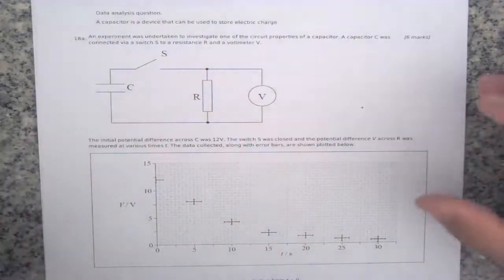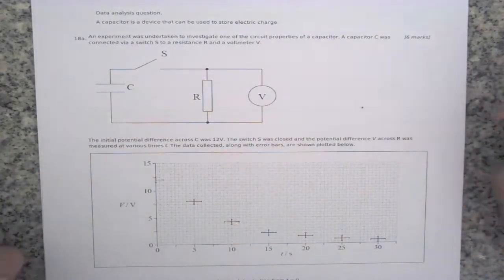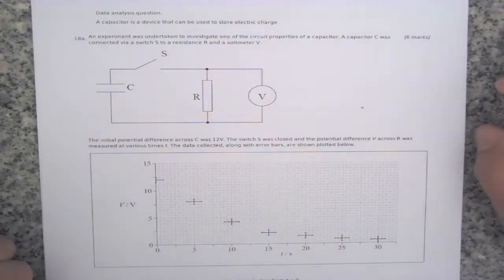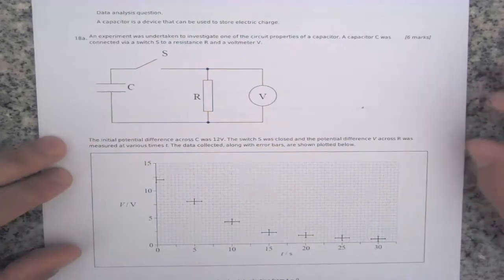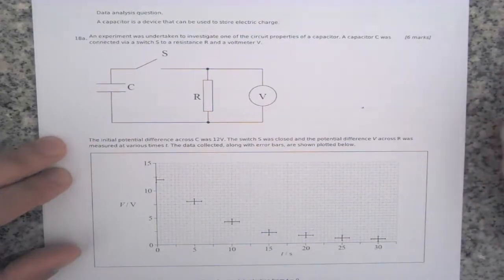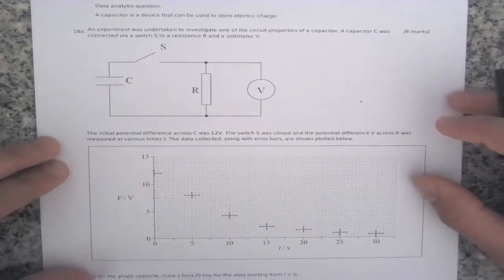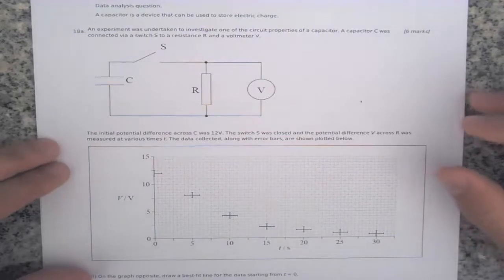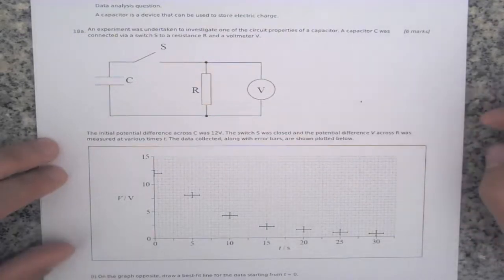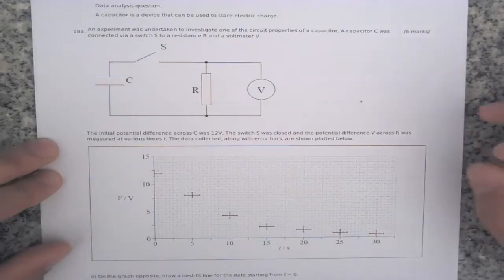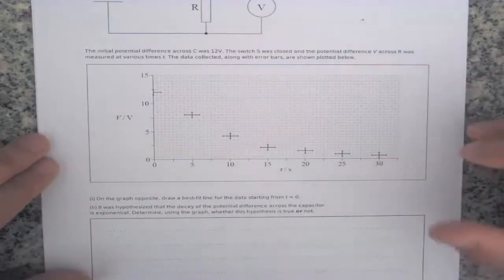The next question: a capacitor is a device that can be used to store electric charge. In experiment 18A, an experiment was undertaken to investigate one of the circuit properties of a capacitor. A capacitor C was connected via switch S to a resistance R and a voltmeter. The initial potential difference across C was 12 volts. The switch S was closed and the potential difference across R was measured at various times. The data collected along with error bars are shown on the graph.